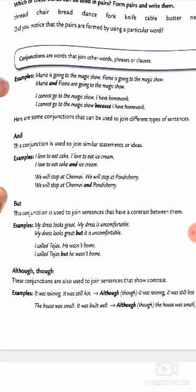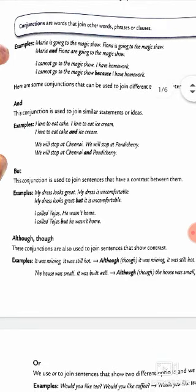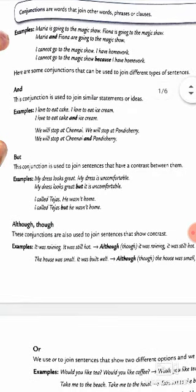But is used to join sentences that have contrast between them, opposite ideas. My dress looks great but it is uncomfortable. I called Tejas but he wasn't home. Two opposite ideas.